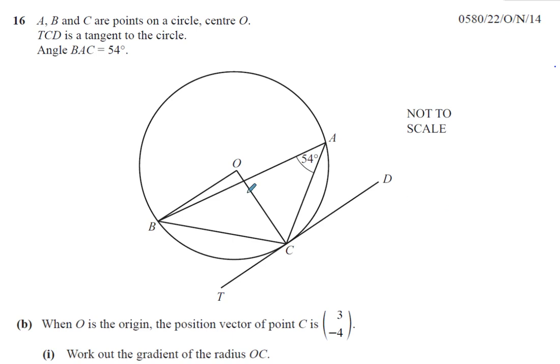First of all, just for your purposes, part A asks you to find BOC. We can see BOC stands on the same arc as BAC. BOC is at the center, BAC is at the circumference. The angle at the center is twice the angle at the circumference, so the angle at the center is going to be 108. So let's quickly do part B.